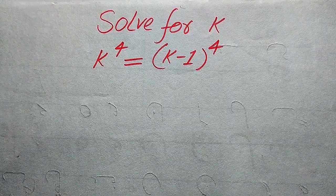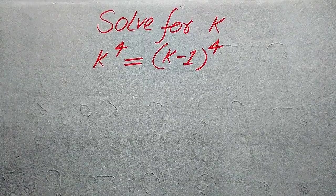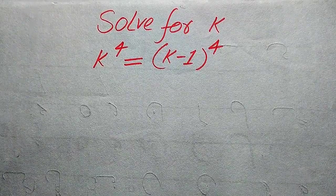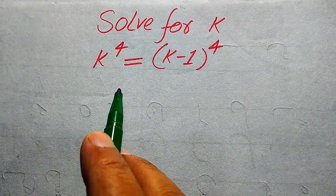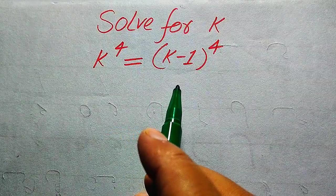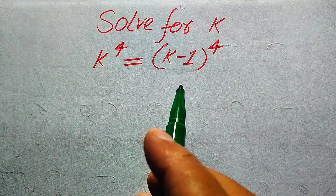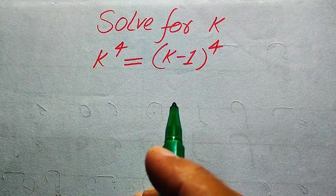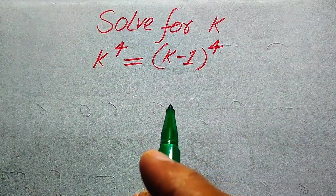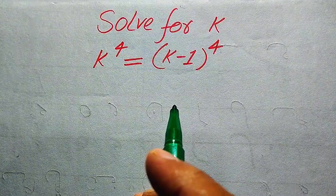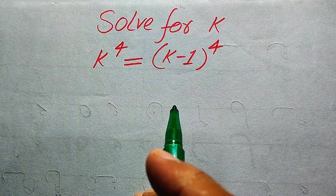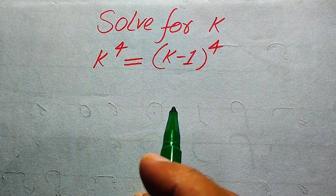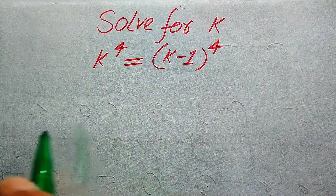Hello everyone. How to solve this problem for the values of k, if we have k to the power of 4 equals k minus 1 to the power of 4. We solve this problem for all the values of k, so here we need to find all the roots of this equation.